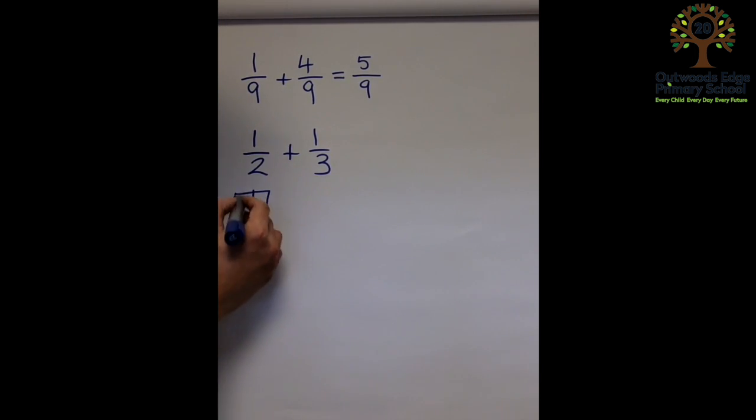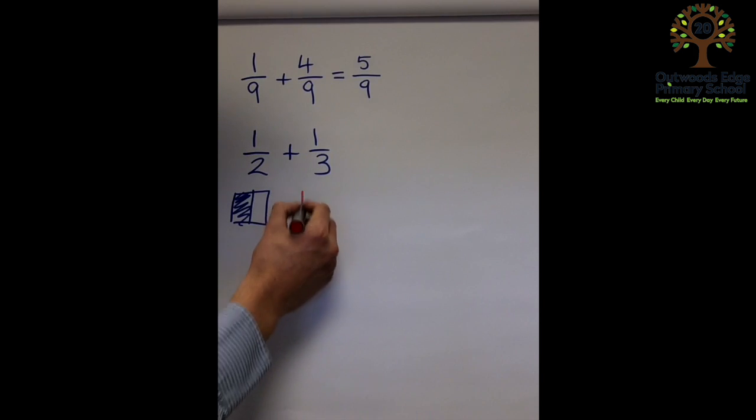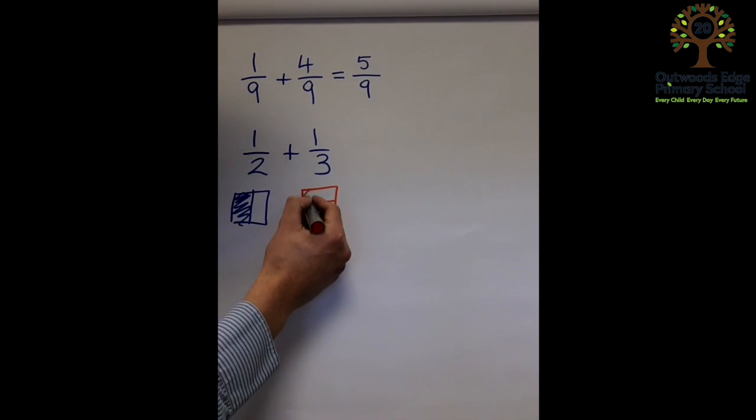So we've got a half here, and I'm going to shade that in, and then underneath, in a different colour just to make it clear, I'm going to draw our third. And I've drawn those going horizontally across the page.